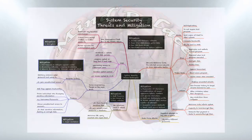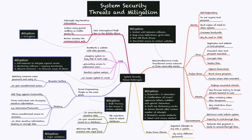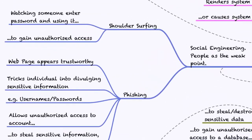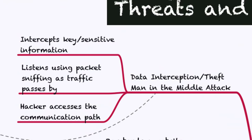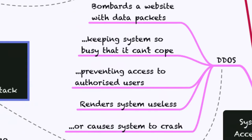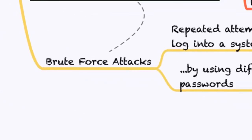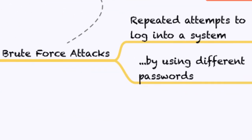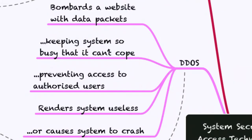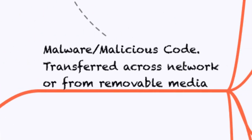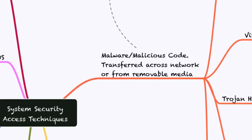Let's have a look at what we're going to be using to put in our mind palace today. This is about system security threats and mitigation — you need to know what the threats are and how to resolve them. We'll look at social engineering to start off with, then move on to data interception or theft, SQL injections, brute force attacks, DDoS attacks, and malicious code in all of its forms.